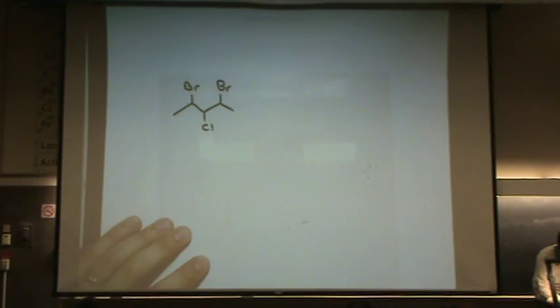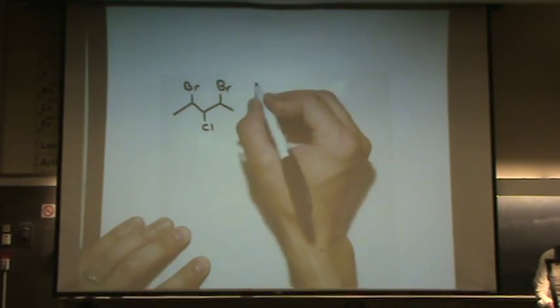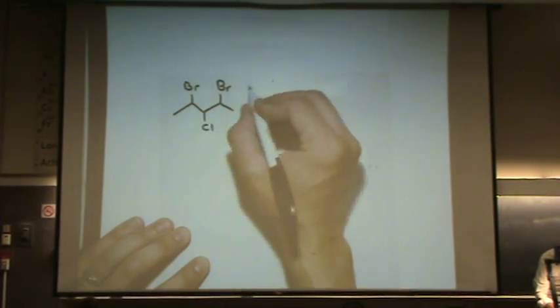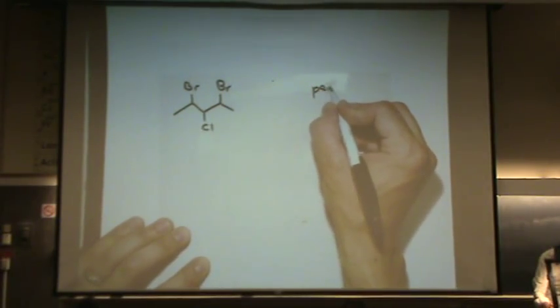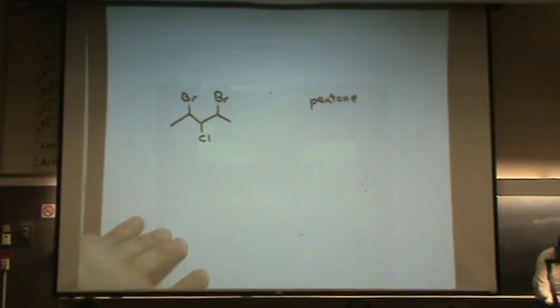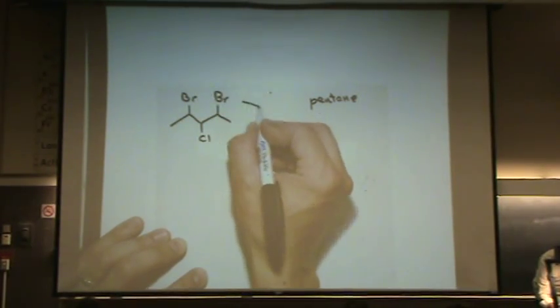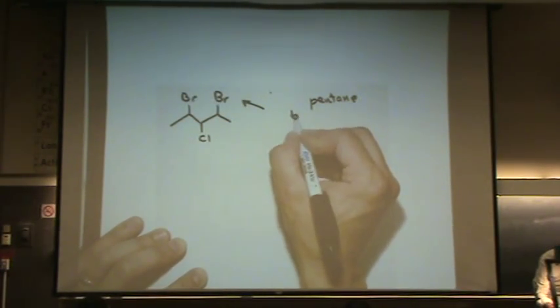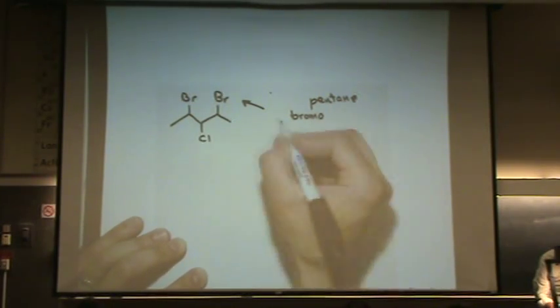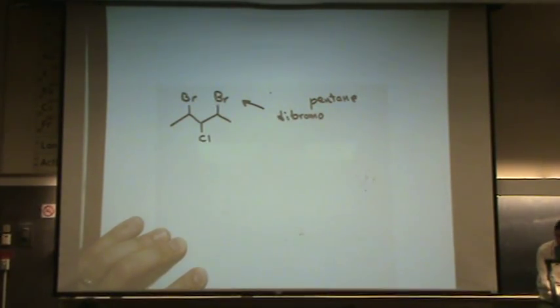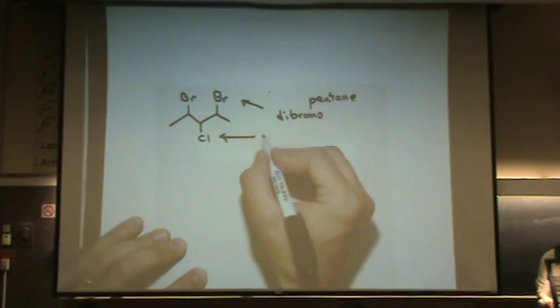So, how do you do this? Similar to the transition metal, the main chain is pentane, so you still do the main chain. And similar to the transition metals, these are called bromo, and since there's two of them, it's di, and this is chloro.